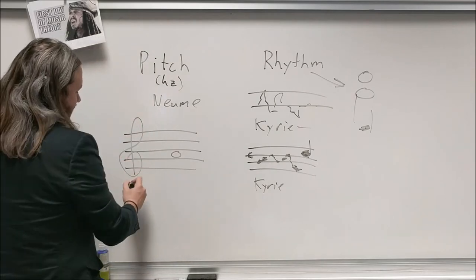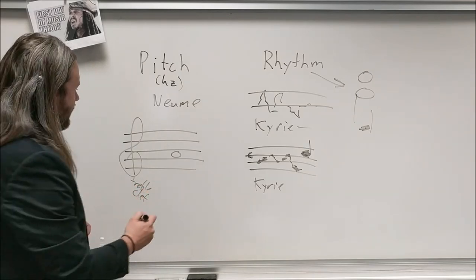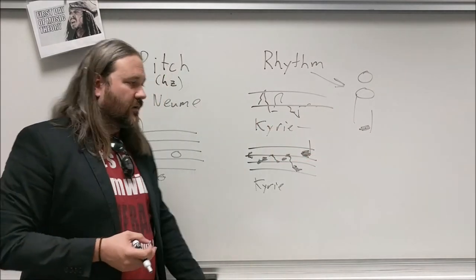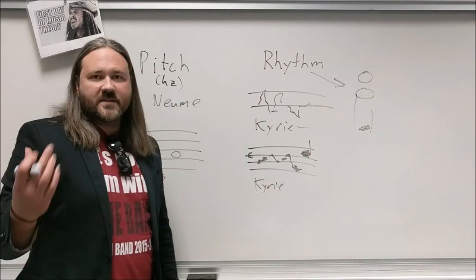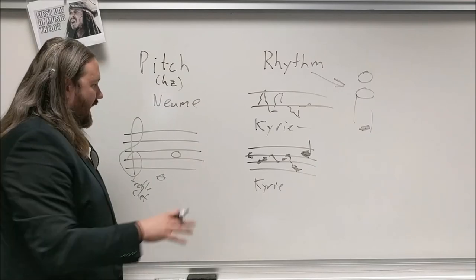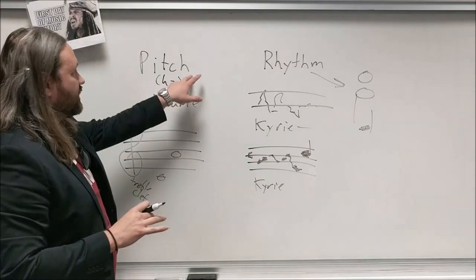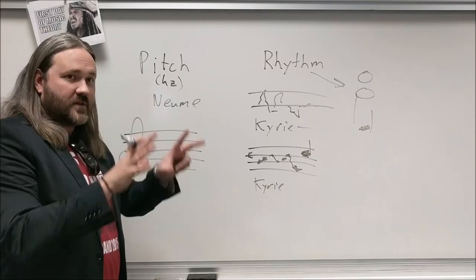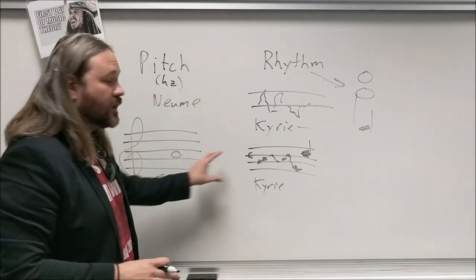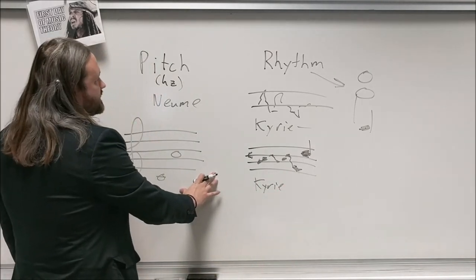This is the treble clef, used for higher-pitched instruments. The note on a ledger line just below the staff would be middle C on the piano, and it covers everything up to very high notes on flute or violin. There are also different clefs: treble clef, alto clef, and bass clef — each assigned to a different range of pitches. The bass clef represents lower pitches, the treble clef the higher pitches, and the alto clef represents pitches in the middle between those two. There's also a tenor clef.